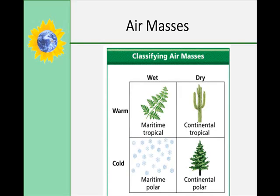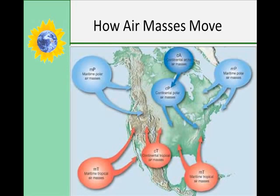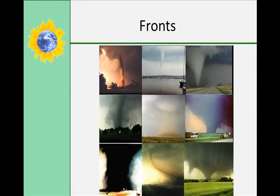Air masses can be warm or cold and humid or dry. As an air mass moves into an area, weather changes. Most air masses move in the United States by being influenced by the prevailing westerlies and jet streams. Movement is mainly easterly in direction, and north-south movement is usually due to the jet stream. As air masses move, they collide with each other. Air masses don't mix easily; rather, they push each other out of the way. The boundary where two or more air masses meet is called a front.